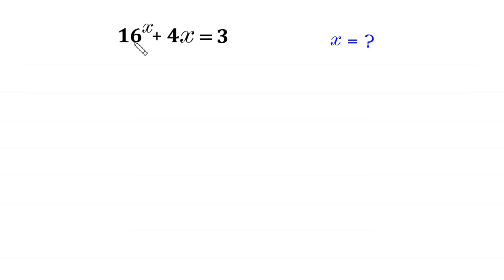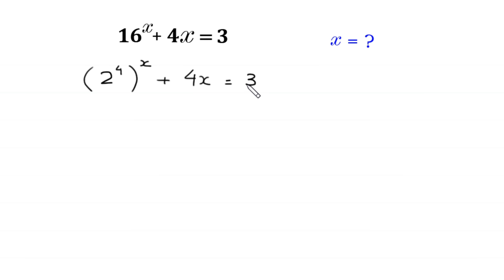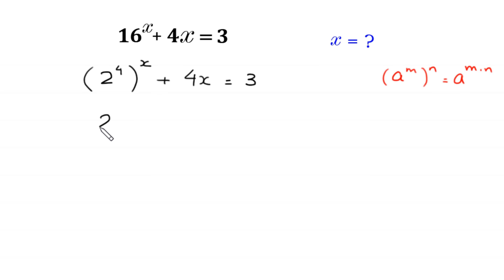We can write 16 to the power x as 2 to the power 4, whole to the power x, plus 4x is equal to 3. According to the property of exponents, a to the power m whole to the power n is equal to a to the power m times n. So 2 to the power 4 whole to the power x becomes 2 to the power 4x, plus 4x is equal to 3.